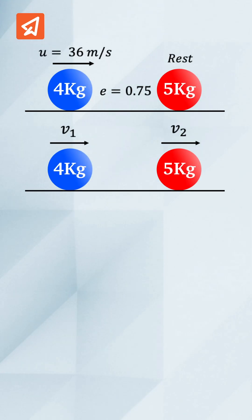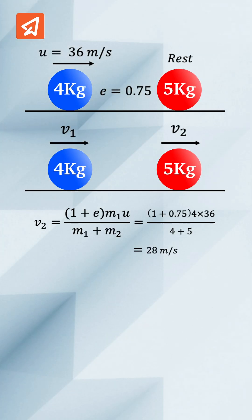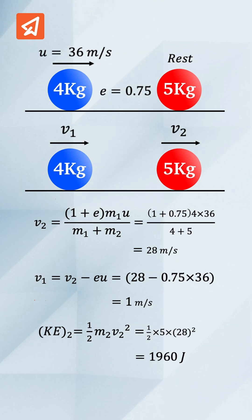When we substitute these values in the trick, we get the velocity of 5 kg ball as 28 meter per second and velocity of 4 kg ball as 1 meter per second and hence the kinetic energy of 5 kg ball comes to be 1960 Joules.